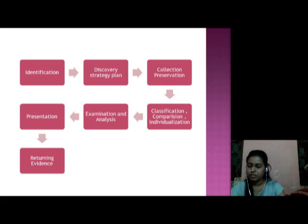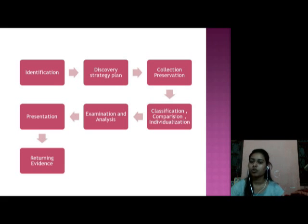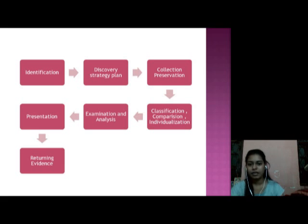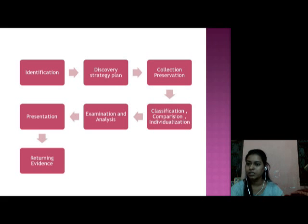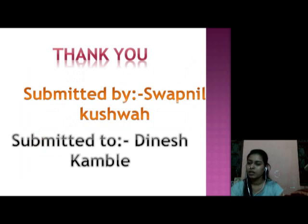The process summary: first, we identify the evidence of what crime was committed. Then, discover a strategy plan — how to analyze all the scenarios of the crime. Next, collection and preservation — how to collect and preserve digital evidence. Then, classification, comparison, and digitalization. Finally, examination and analysis, followed by presentation and returning of evidence. Thank you.